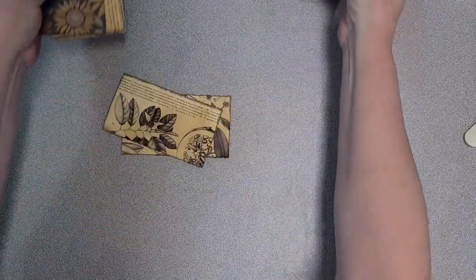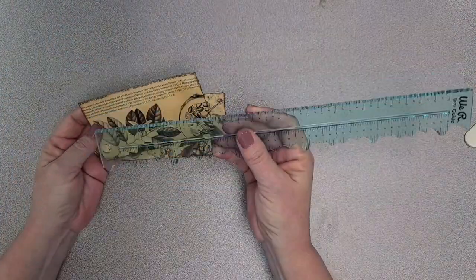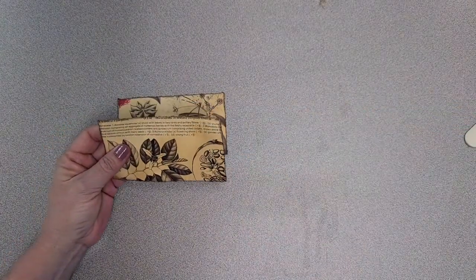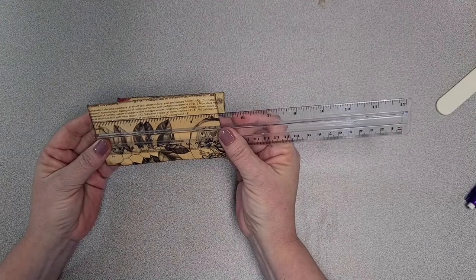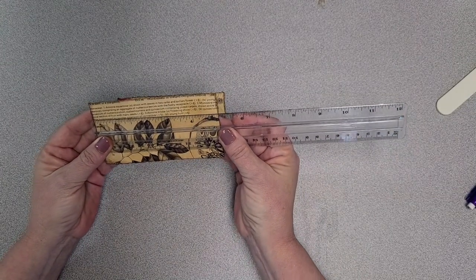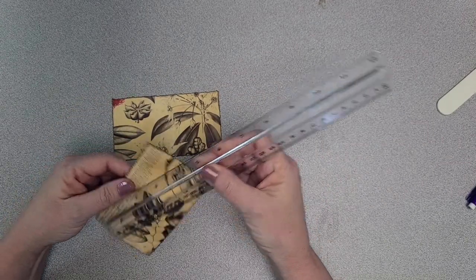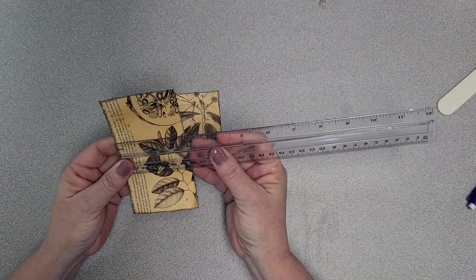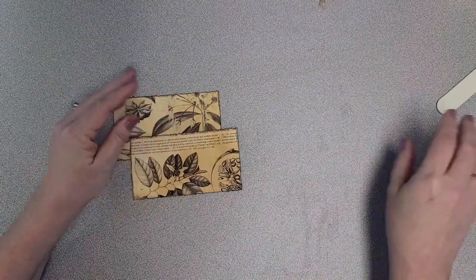I'm going to jump right in. I've already torn and inked some book pages. In all transparency, I did use a tear ruler. Here I've got two pieces of book page that measure five inches wide by two and three-quarter inches tall.